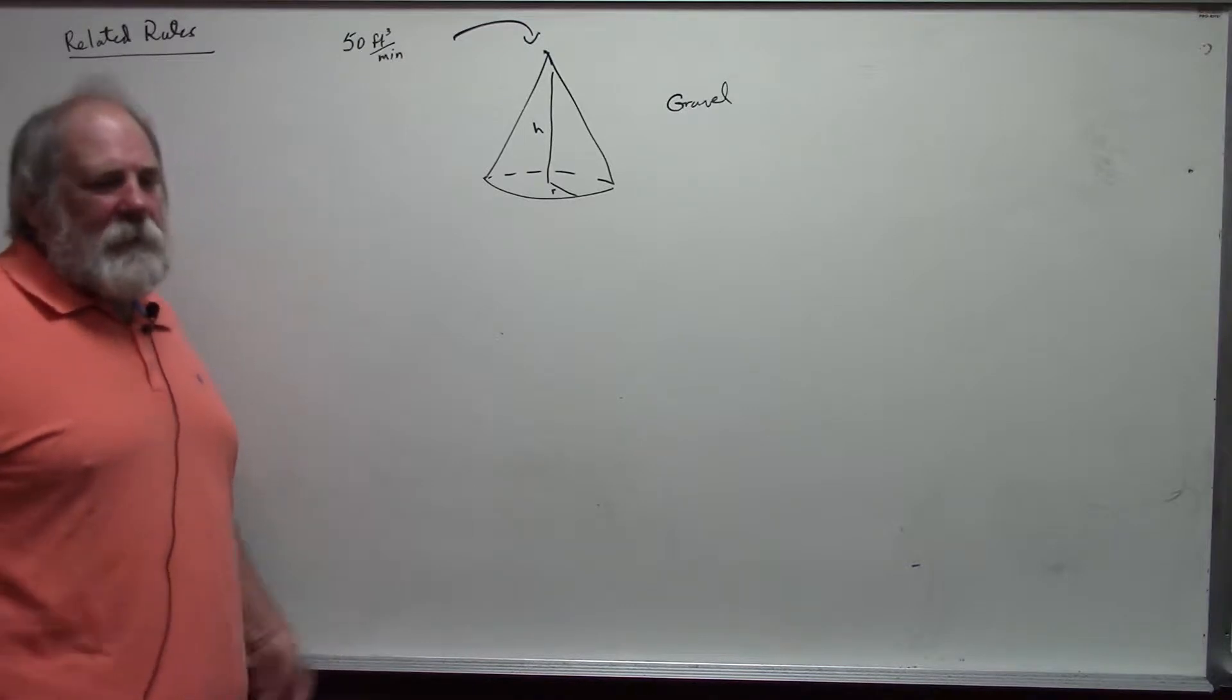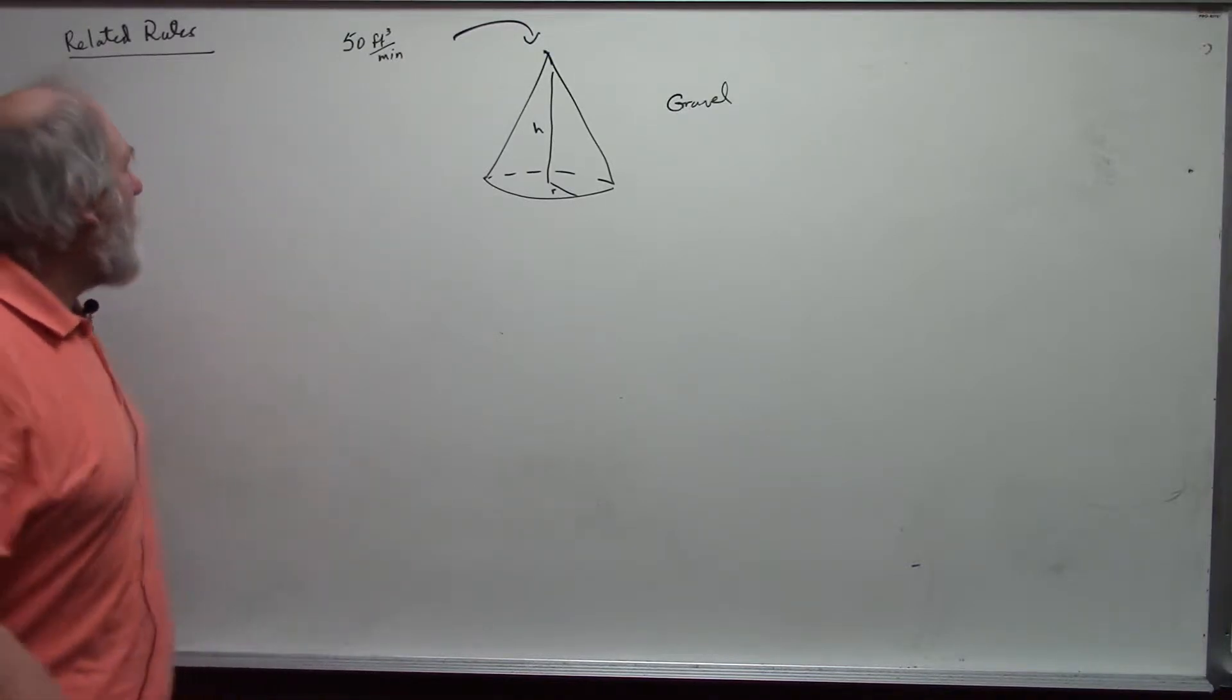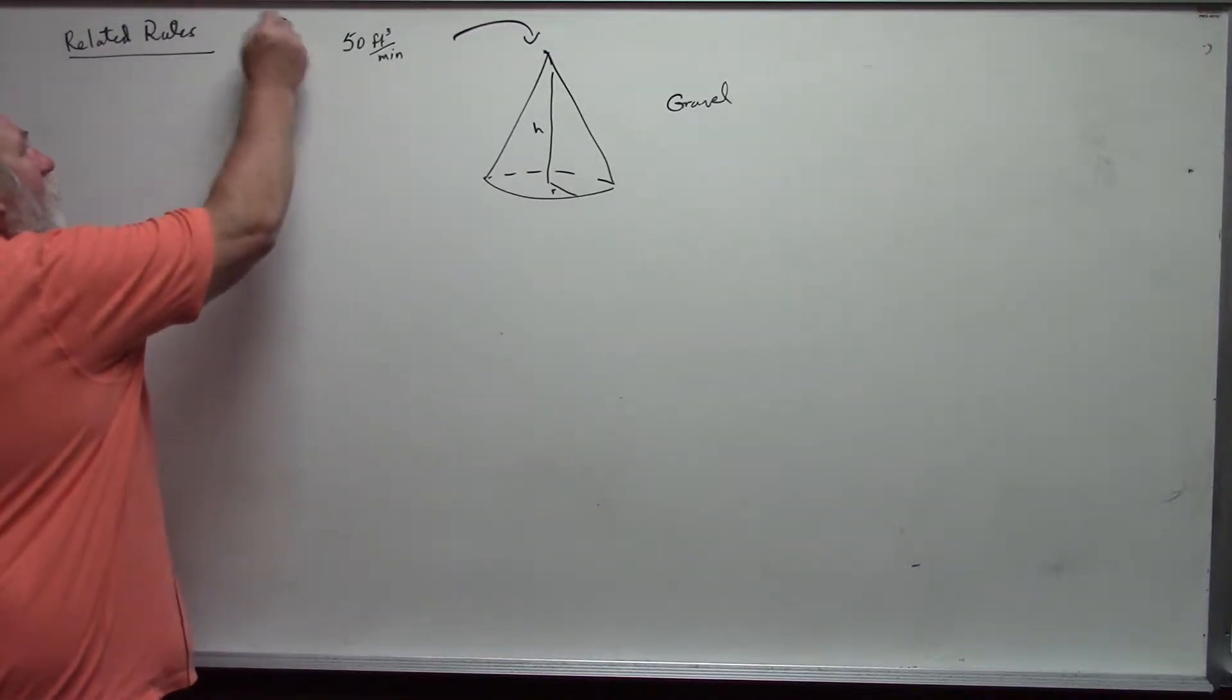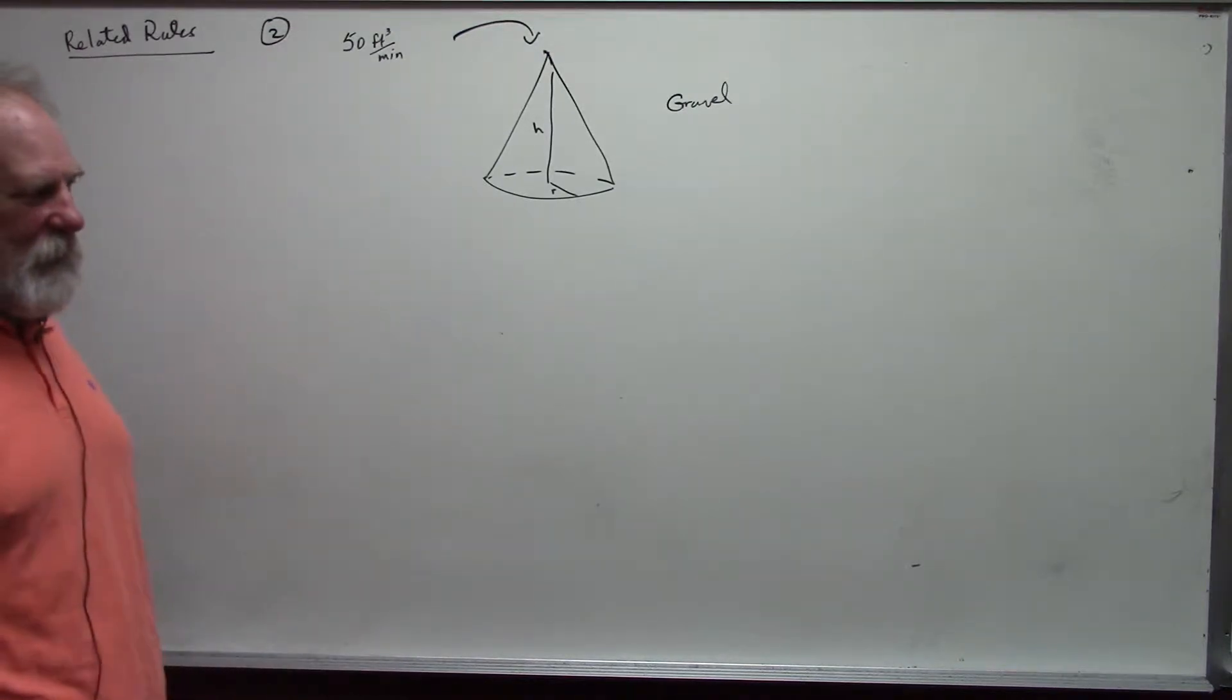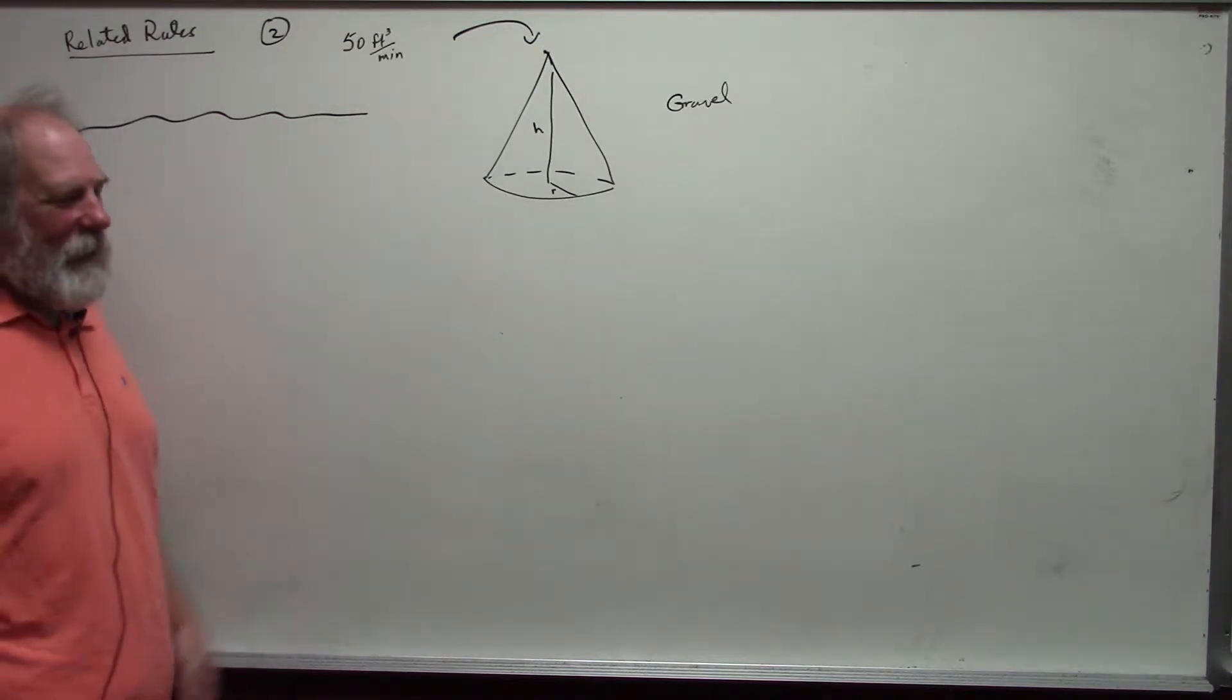So, as I go through the problem, by the way, this is problem number two in the worked out problems. I'm going to do another one here after this one. But as I go through this, I'll kind of go through the steps. The first thing that we need to do is determine what rate of change we are given and what rate of change we need to find. I would encourage you to look at the problem. I'm not going to write the problem out because my handwriting isn't that great and you can have it in front of you already.